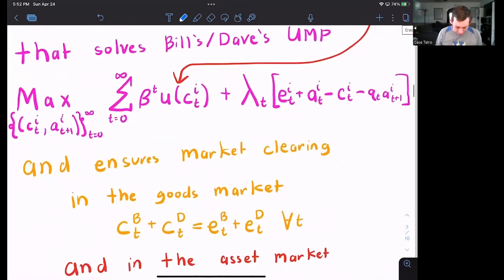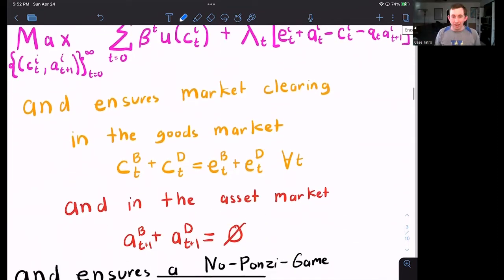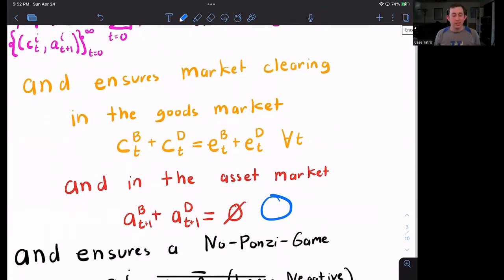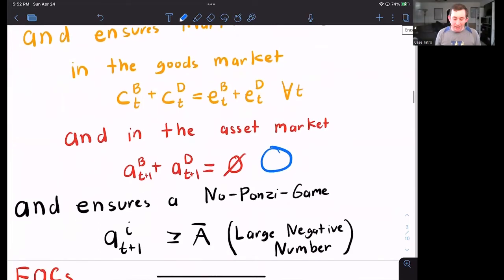And we still have that market clearing condition in the goods market and in the asset market where we said in each period, the number of coconuts that are borrowed and lended have to be the same. You can't borrow a coconut that doesn't exist and you can't lend a coconut that doesn't exist.